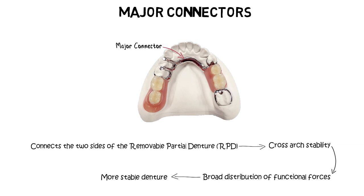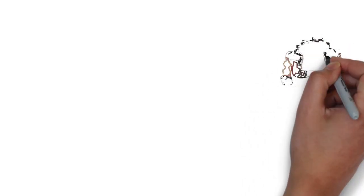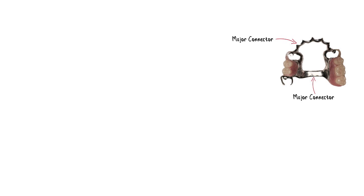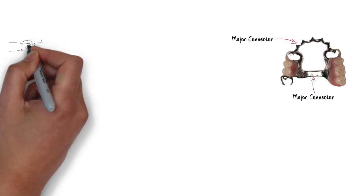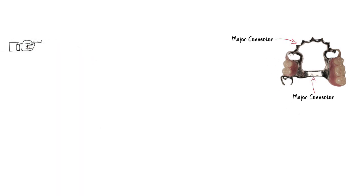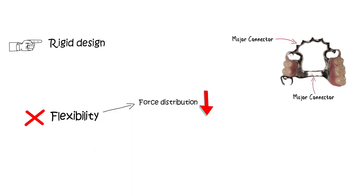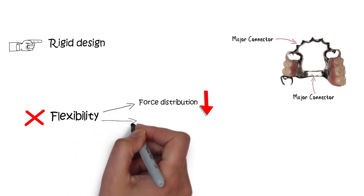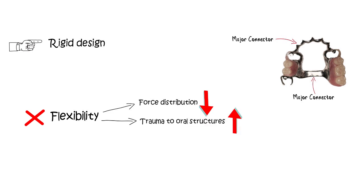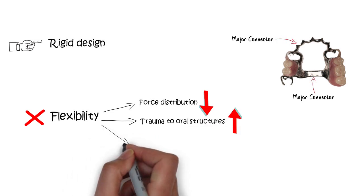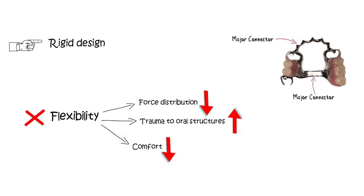There are a few basic guidelines to keep in mind before designing any major connector. In order to provide cross-arch stability, the major connector needs to have a rigid and solid design — it cannot be flexible. Any kind of flexibility will not only make force distribution less effective, but will also end up damaging the underlying tissues. The rigidity of the major connector is therefore very crucial to its design.